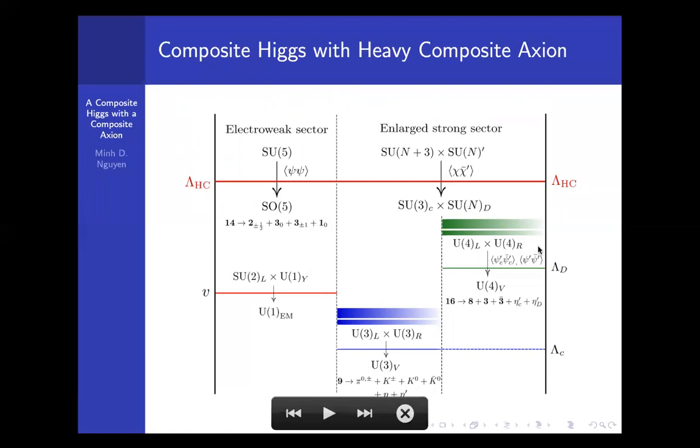Here we write down the normal constituent for the axi-quark. But if we embed the ψc into the SU(N+3), then one of this axion, one of these things could be heavy.